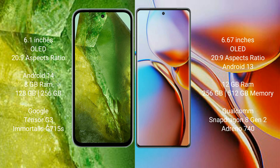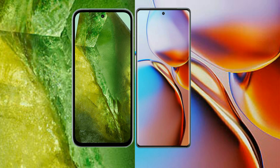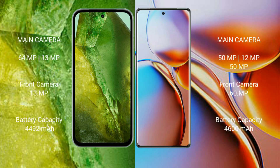Motorola Edge 40 Pro comes with 12GB RAM and 256GB to 512GB internal storage, a Qualcomm Snapdragon 8 Gen 2 processor, and GPU Adreno 740. Google Pixel 8a features a dual camera setup: 64MP and 13MP.